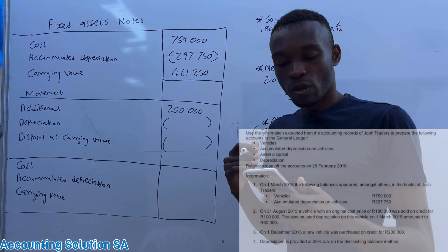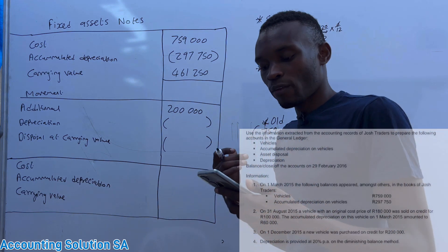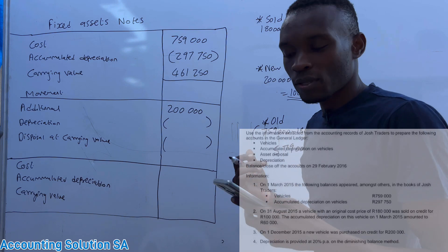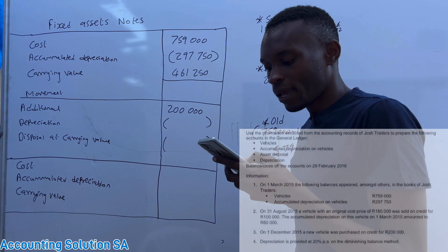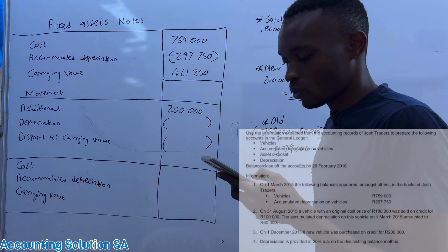Now let's go to number four so that we can go to number two, because we can't go to number two if we don't know depreciation method that we need to use. Depreciation is provided at 20% per annum on diminishing balance method.